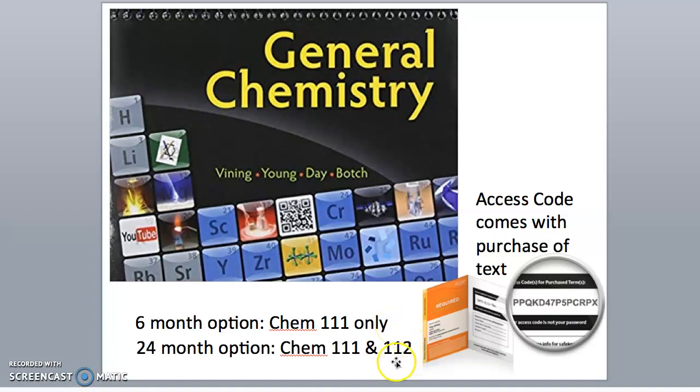If you are going to be taking Chem 112, you should purchase the 24-month code. This way, you will not need to purchase anything for the second semester.